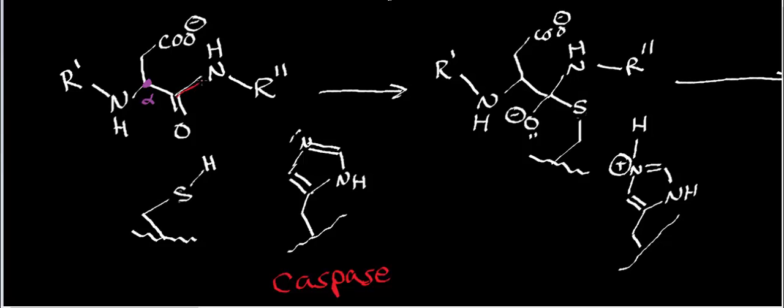The bond that's going to be broken by the caspase — and in general with all proteases — is this one right here. What you have to decide is whether it's going to be the bond on the C-terminal side of the alpha carbon, or the one on the N-terminal side. Usually the name of the enzyme gives that away.